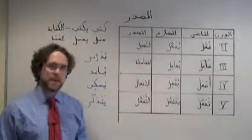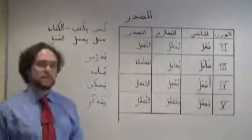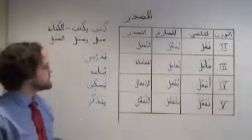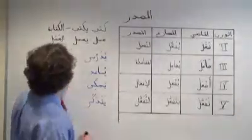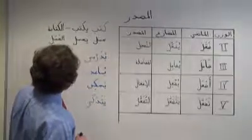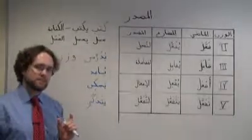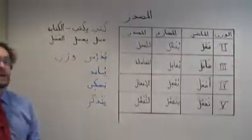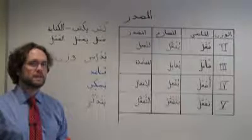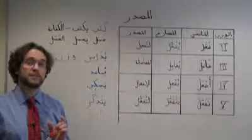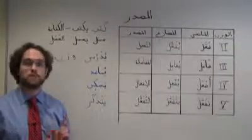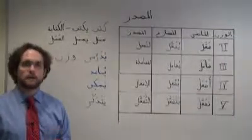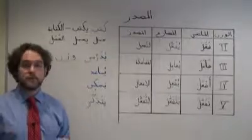The nice thing about the derived forms is that if we recognize a verb's pattern, its وزن, remember that word? If we can recognize the وزن of that verb and fit it into one of the derived verb patterns, then virtually 100% of the time we're going to know how to derive that verb's مصدر form. We don't need to play a guessing game or go look it up in the dictionary. We can derive it fairly mechanically.